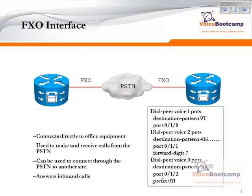An FXO port, on the other hand, is an analog port that allows you to connect a Cisco router to a service provider or telco, connecting directly to office equipment. It could be a PBX at your office or a PBX in a service provider network. It is used to make and receive calls from the PSTN, and it can be used to connect to another site by dialing through the PSTN.